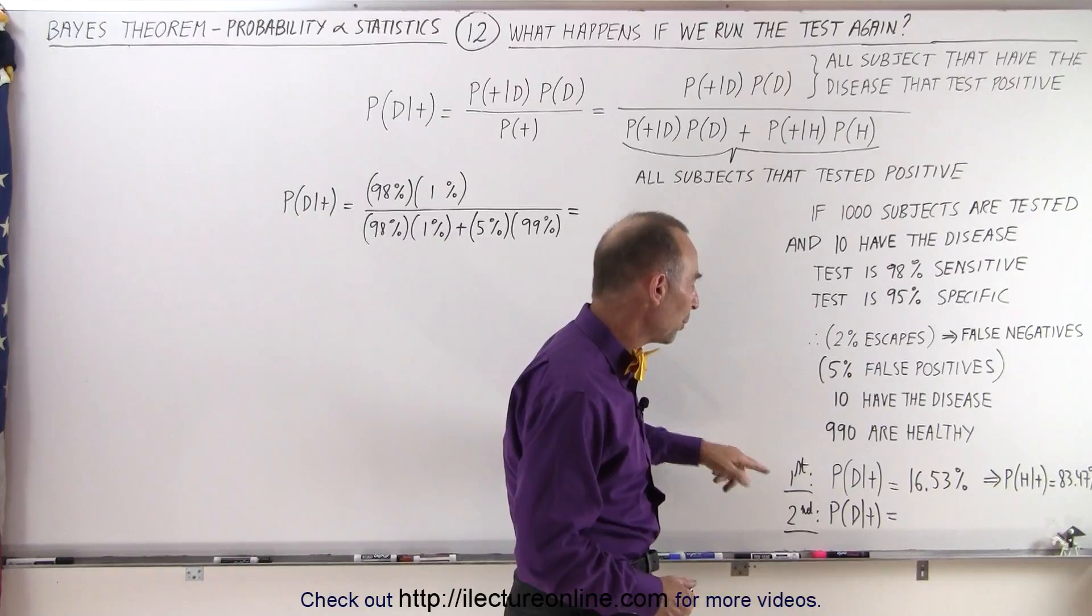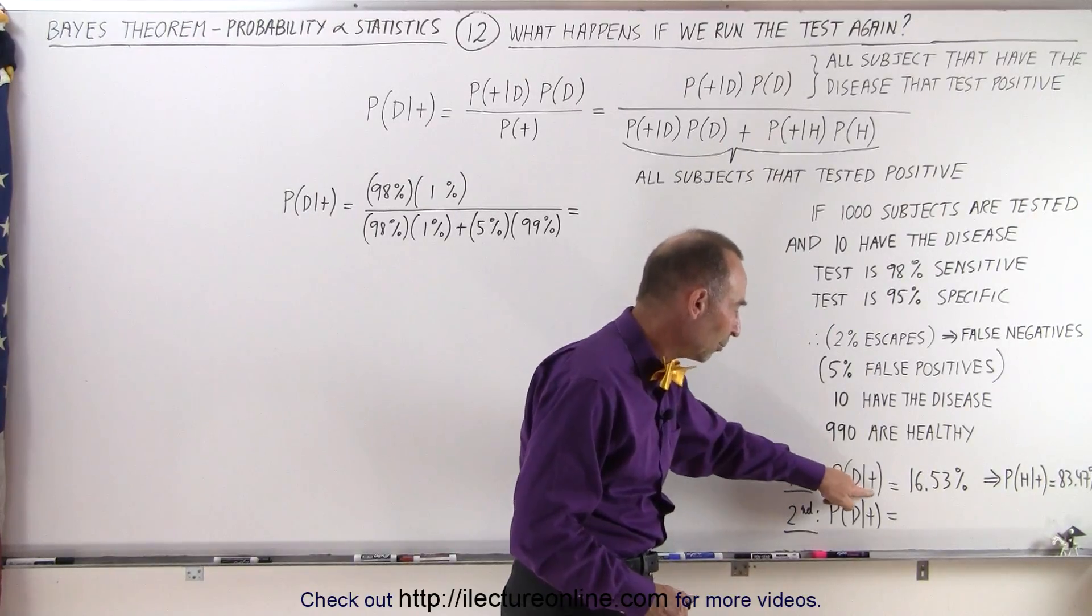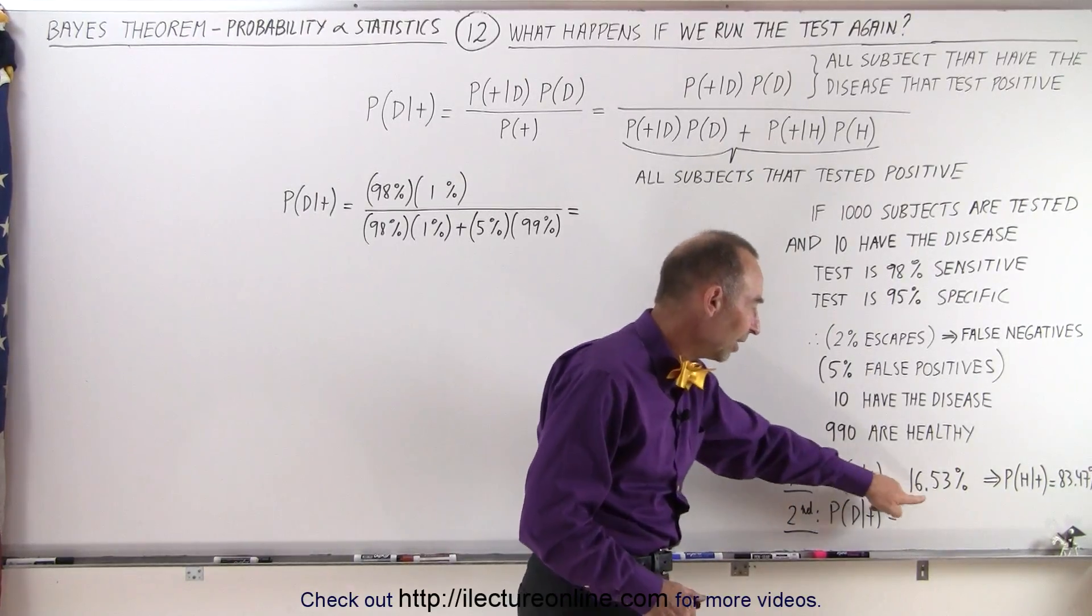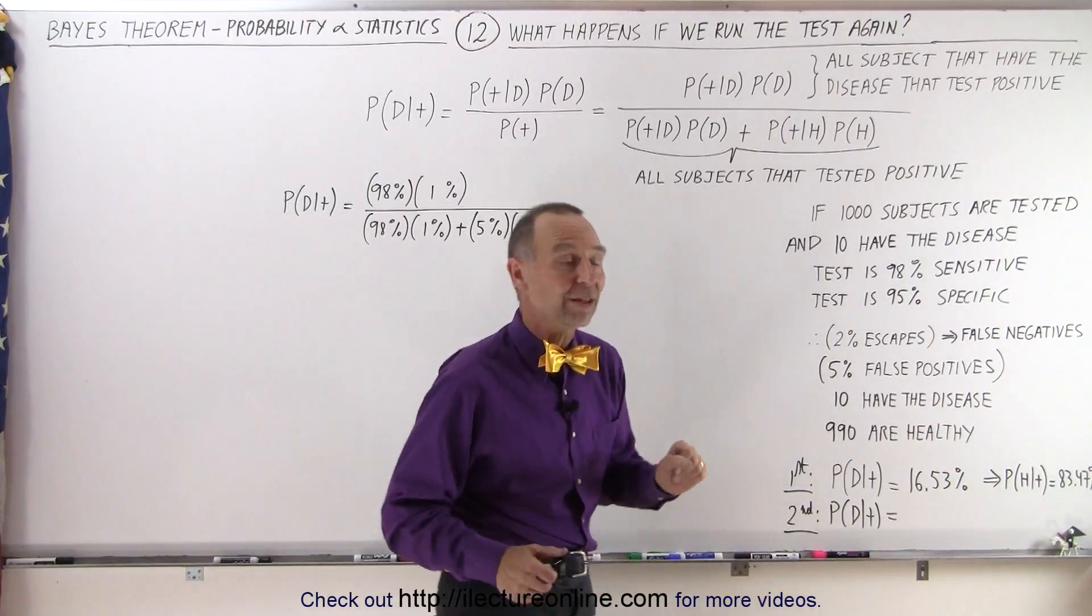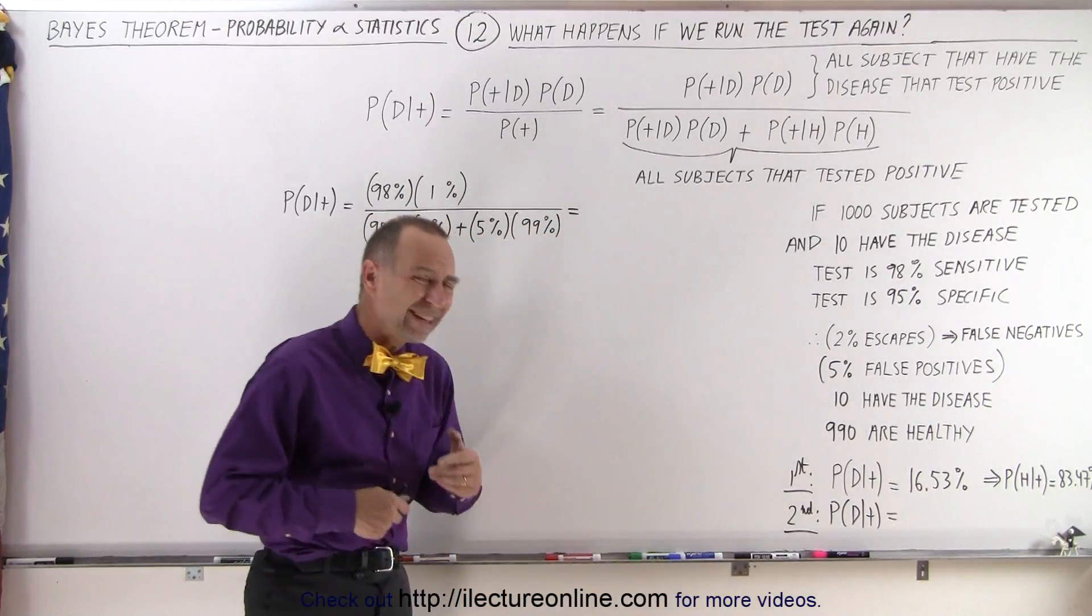that means that we end up with a probability that if you test positive that you'll have the disease is 16.53%. So that's not very good.